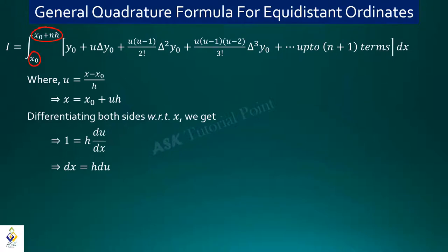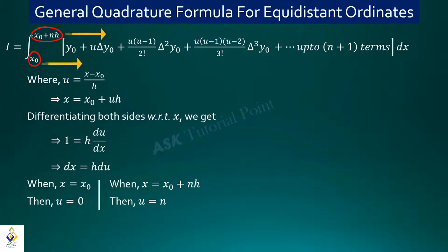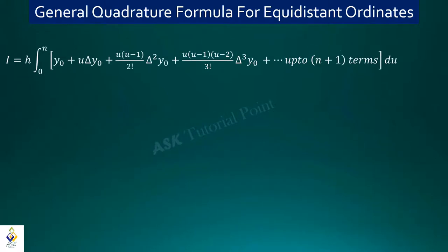To adjust the limits to the new variable u: when x = x₀, the relation gives u = 0; when x = x₀+nh, the relation gives u = n. So the limits x₀ to x₀+nh are replaced by 0 to n, and dx is replaced by h·du. We utilize this equation: dx = h·du, where h is constant and can be pulled outside the integral.